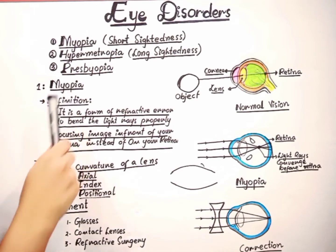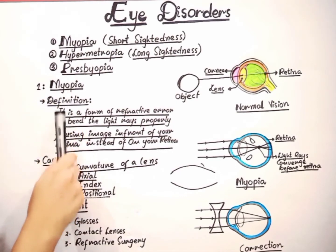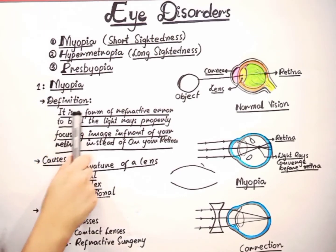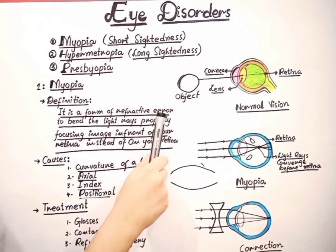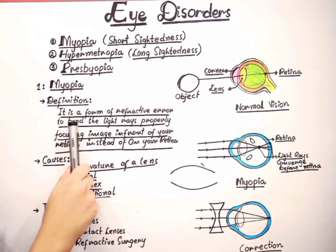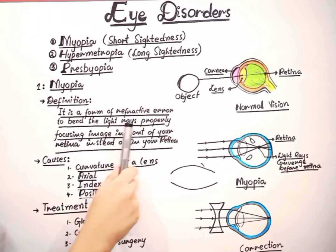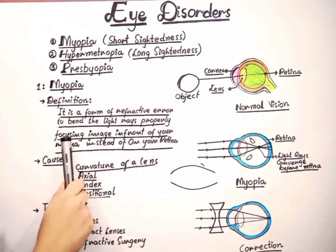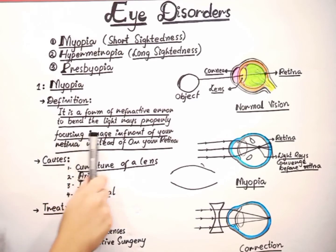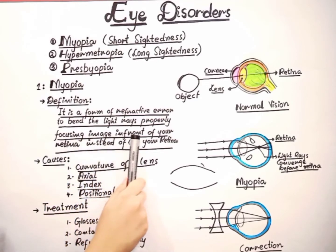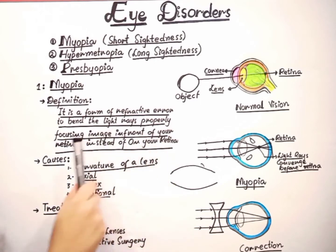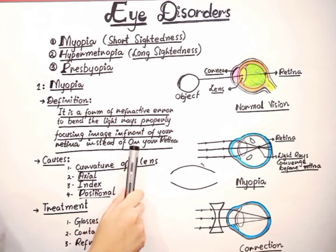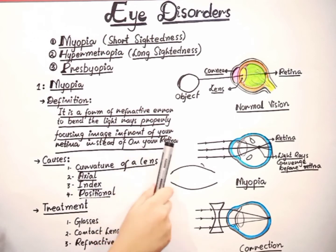Here is the definition of myopia. It is a form of refractive error — a failure to bend the light rays properly — and as a result, the image will be focused in front of your retina instead of on your retina.